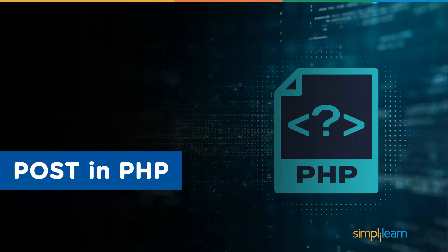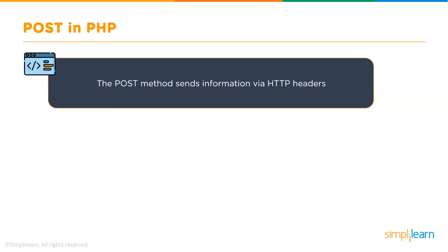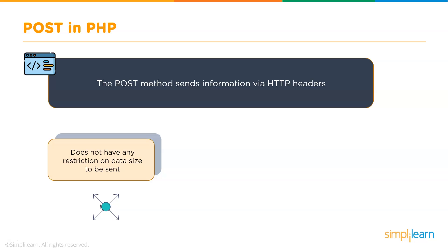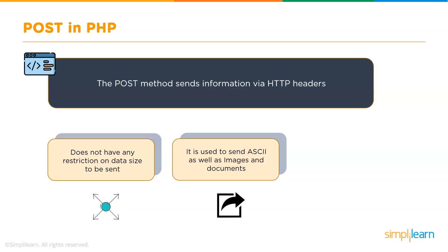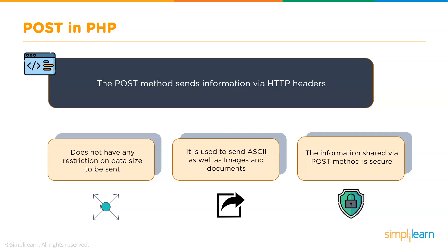The POST method transfers information via HTTP headers. The information is encoded as described in the GET method and put into a header called query string. The POST method does not have any restrictions on data size to be sent. The POST method can be used to send ASCII as well as binary data, and the data sent by the POST method goes through the HTTP header. Security depends on the HTTP protocol used. By using secure HTTP, you can make sure that your information is secure.